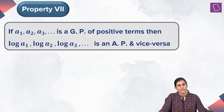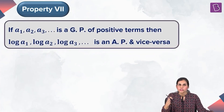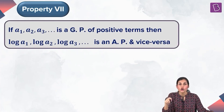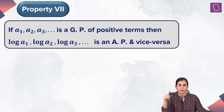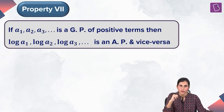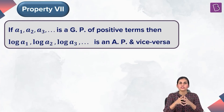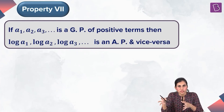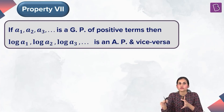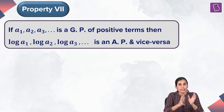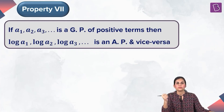The last property says that if a₁, a₂, a₃, ... is a GP of positive terms (so their logarithms are defined), then log a₁, log a₂, log a₃, ... is an arithmetic progression. This is true both ways: if a₁, a₂, a₃, ... is a GP of positive terms, then the log sequence is an AP; and if the log sequence is an AP, then a₁, a₂, a₃, ... is a GP of positive terms.